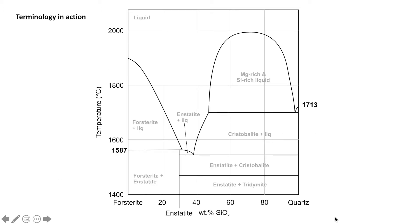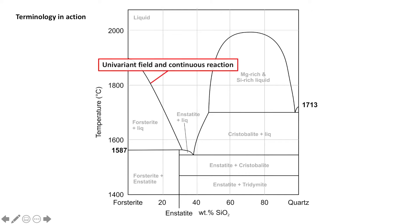It helps to see these definitions annotated onto the phase diagram we're looking at today. Outlining the diagram: we have forsterite on the left-hand side of the x-axis, quartz on the right-hand side, and enstatite sitting at around 70% forsterite and 30% quartz. As always, the y-axis is temperature. The top line is our liquidus — anything above this is 100% liquid.